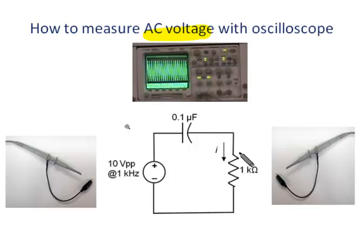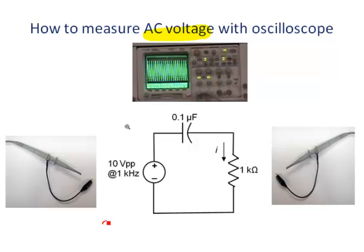Let's look at this simple circuit. The AC power supply generates 10V peak-to-peak at 1 kHz sinusoid. So the peak value should be 10 divided by 2, that is 5V peak. The frequency is 1 kHz.